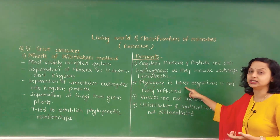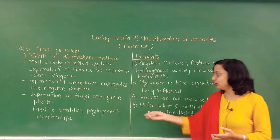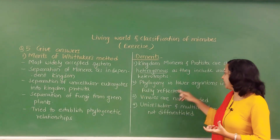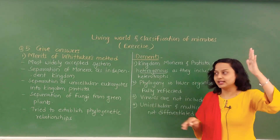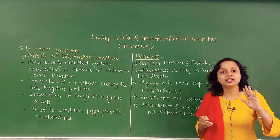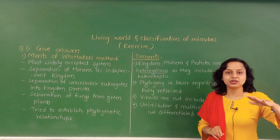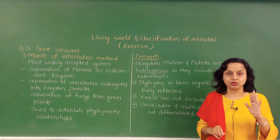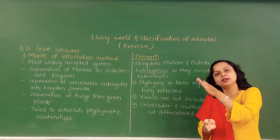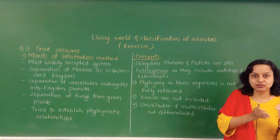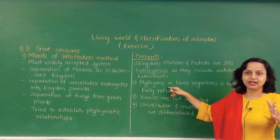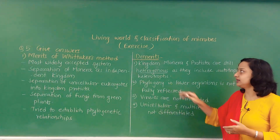Next, second demerit: phylogeny in lower organisms is not fully reflected. Phylogeny means the sequence of evolution — from this form, that form evolved. In lower organisms — meaning the ones that evolved first at the very beginning, i.e., Kingdom Monera and Kingdom Protista — lower means basic, and higher means advanced. Lower organisms have the most basic body structures and body features at the basic level. Higher organisms have highly evolved cell structures and body features present in them. So in those organisms with the most simple structures, the sequence of evolution is still not clearly shown — a clear-cut separation cannot be shown. This is another demerit.